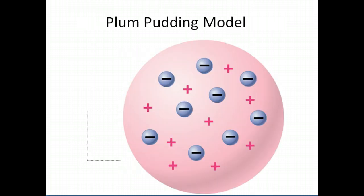This is another picture of Thompson's plum pudding model. Again, the electrons are represented by the plums or raisins in the pudding, and the rest of the pudding is the positively charged part of the atom.